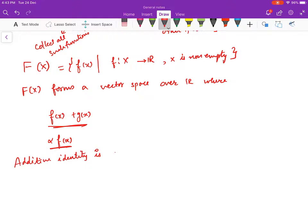The zero function is a function from X to R which takes every element of X to 0. This is the additive identity. Then you have the additive inverse.